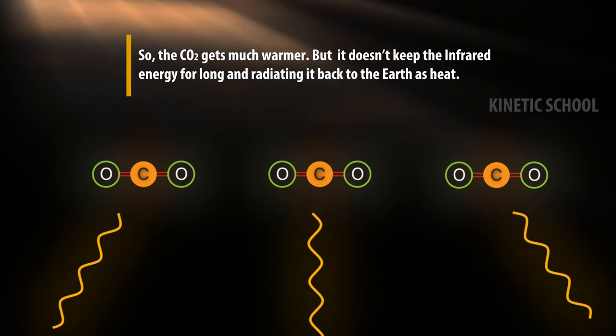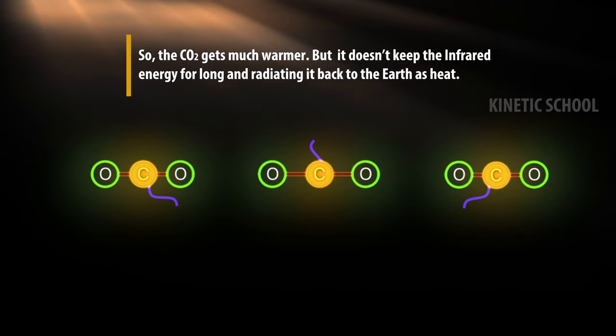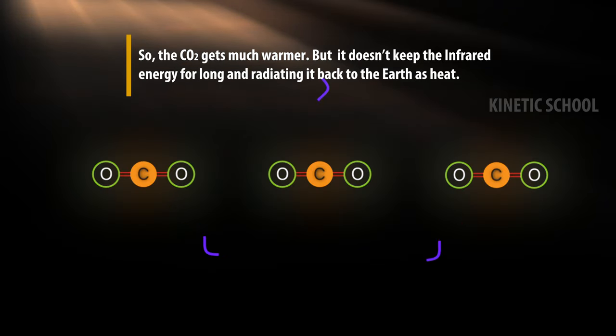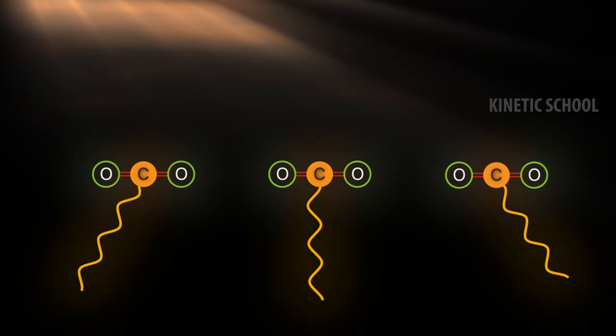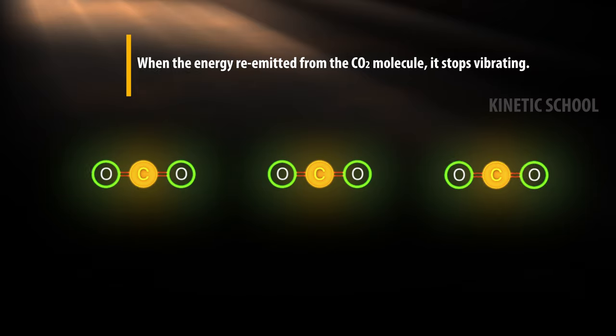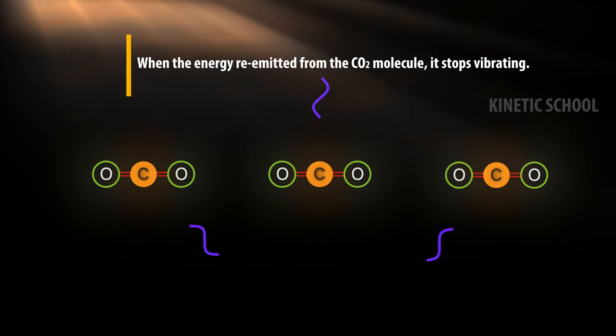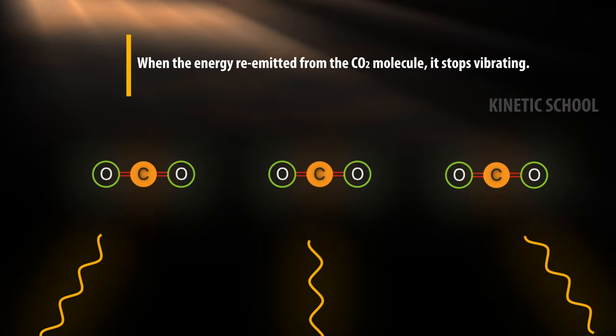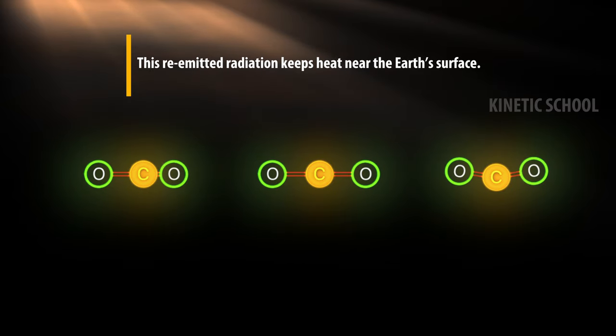So the carbon dioxide gets much warmer, but it doesn't keep the infrared energy for long and radiates it back to the earth as heat. When the energy is re-emitted from the carbon dioxide molecule, it stops vibrating. This re-emitted radiation keeps heat near the earth's surface.